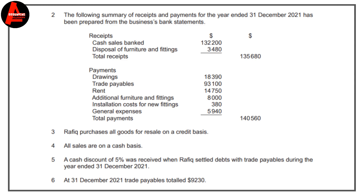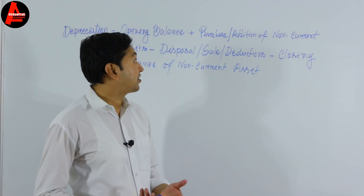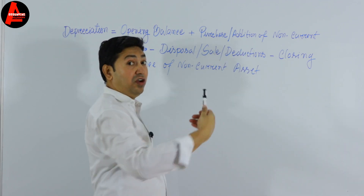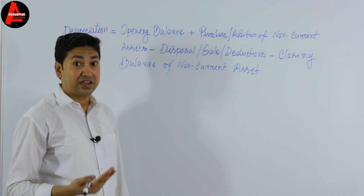The following summary of recent payments for the year ended 31st December 2021 has been prepared from the bank statement. Under receipts, we have disposal of fixtures and fittings at $3,480 — this is not relevant to the revaluation formula. Under payments, additional furniture and fittings was $8,000, and the installation cost for new fittings was $380. Installation cost is also an addition of the non-current asset.